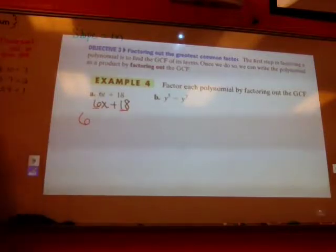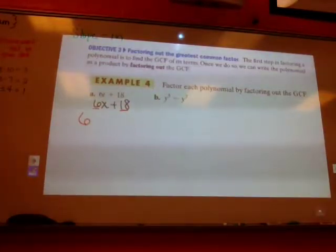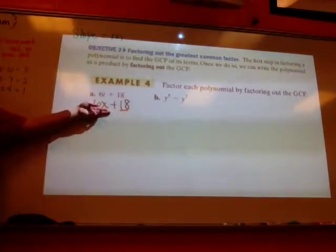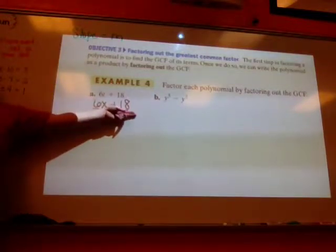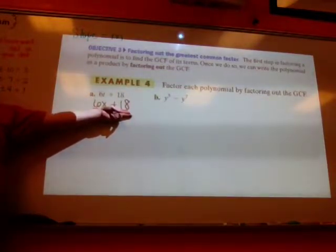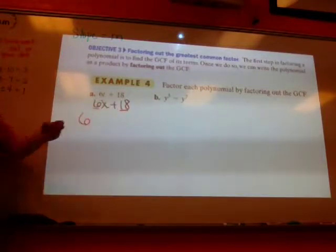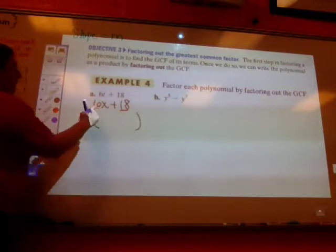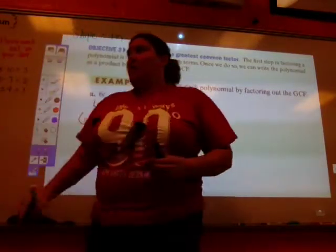Alright, so I'm pulling a 6 out. You ready? If I pull a 6 out, is there a variable I can pull out? Okay, well this one has an x, so I can pull one out of here, but does this one have an x? No, so if I can't pull out of both, I can't pull it all.